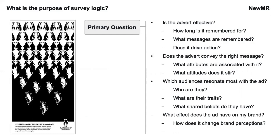However, there's rarely only ever one question. Whilst we might start with a primary question, we often end up with many more. For example, looking at a well-known advert, the primary research question might be: is that advert effective? But as researchers, when we discuss that with stakeholders, lots of other questions come up: How long is it remembered for? What messages are remembered? Does it drive action? Does the advert convey the right message? What attributes are associated with it? Which audiences does it resonate with most? What are their traits and shared beliefs? And what effect does the ad have on my brand — how does it change brand perception? So very quickly we end up with lots and lots of questions from that one primary objective.